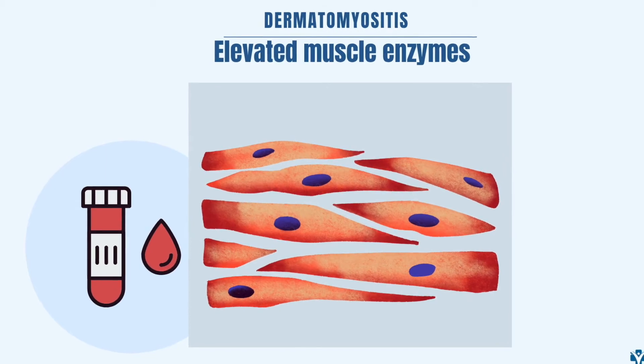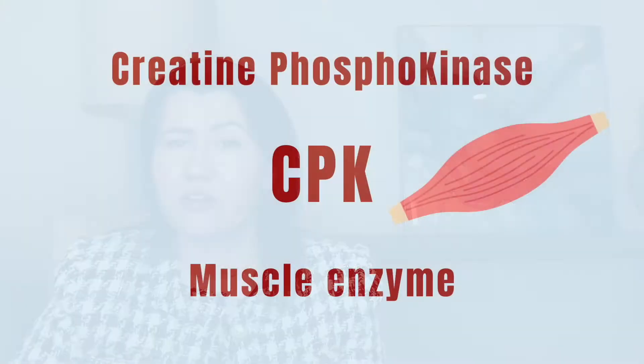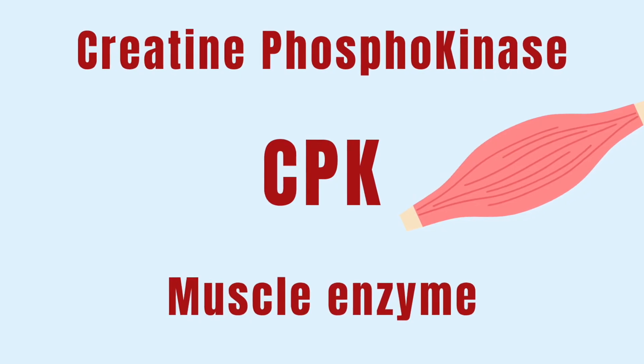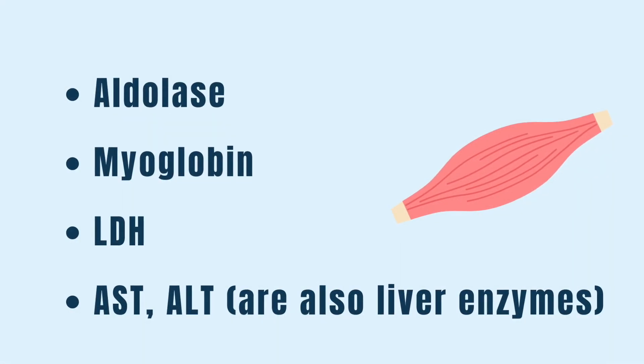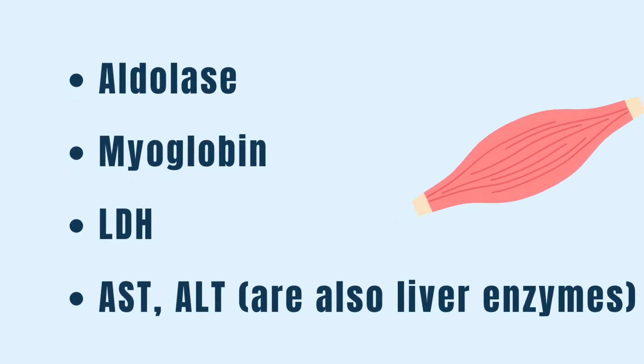Elevated muscle enzymes: This is an essential laboratory test when we suspect an inflammatory muscle disease. The test is called creatine kinase, or CPK, or creatine phosphokinase. This test is elevated in almost all patients with inflammatory muscle disease.